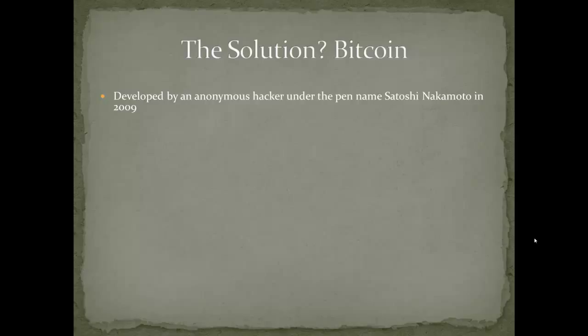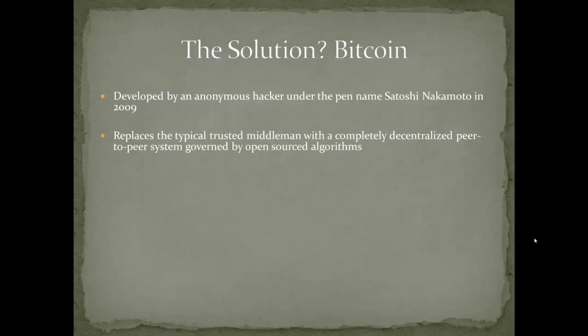He thought about how to build a new type of money that has very few of the problems of old money — one that allows us to spend money anonymously, as anonymous as cash, without any government manipulating or touching it, and in a way that no one entity or person can control it. He wrote this paper back in 2009 and published it anonymously — which is really amazing — an anonymous currency created by an anonymous person under a Japanese pseudonym. And he developed Bitcoin.